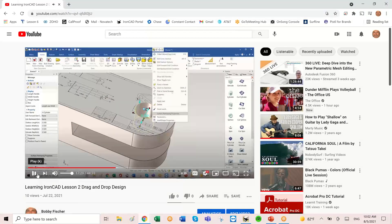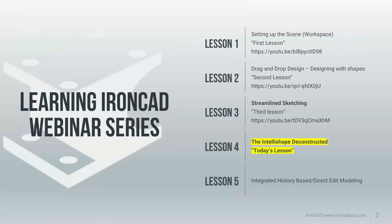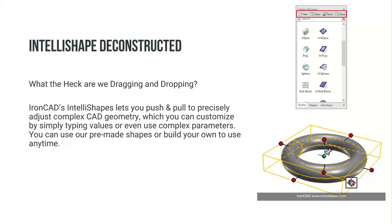You'll be able to see all the different lessons we've done. So let me tell you about today's lesson — the IntelliShape Deconstructed. IronCAD's IntelliShapes let you push and pull to precisely adjust complex CAD geometry, and you can customize them by typing values or using your own complex parameters. You can use pre-made shapes or even build your own to use any time on future models.